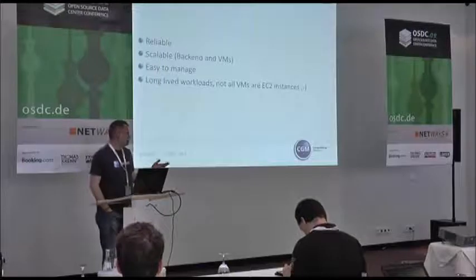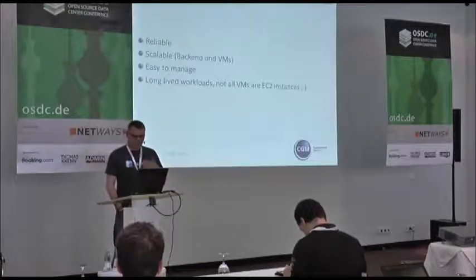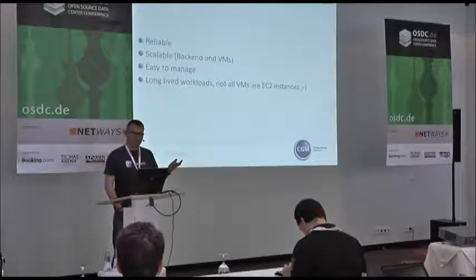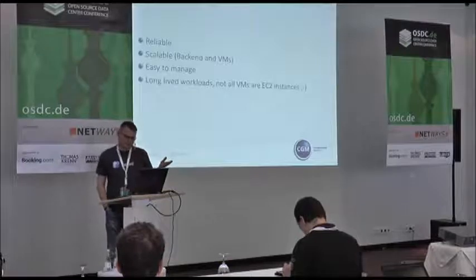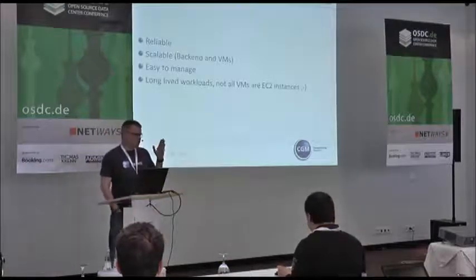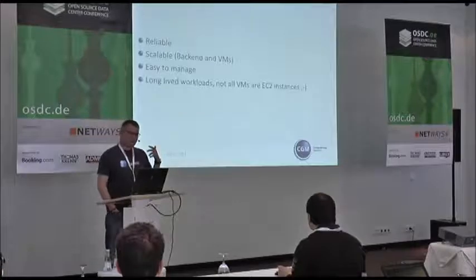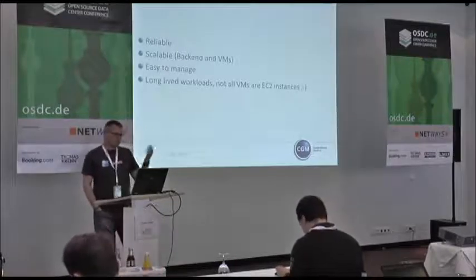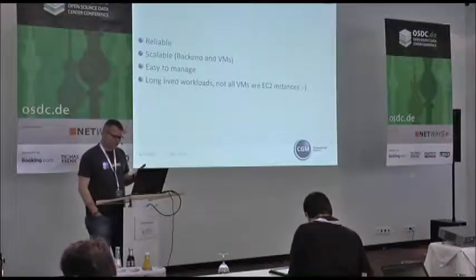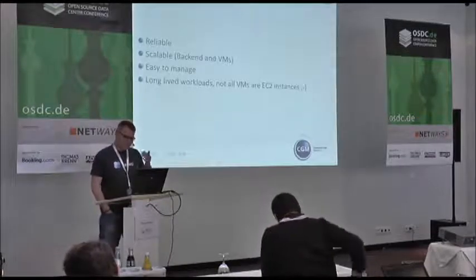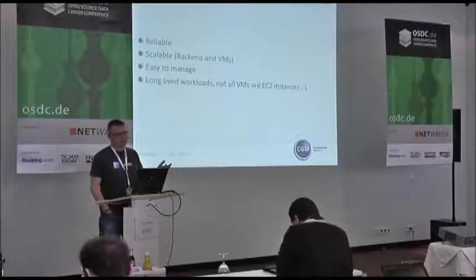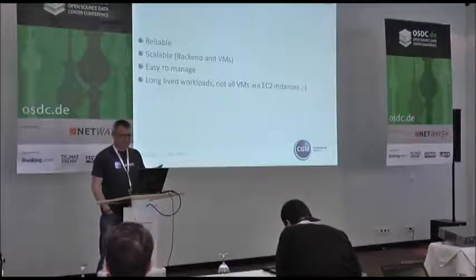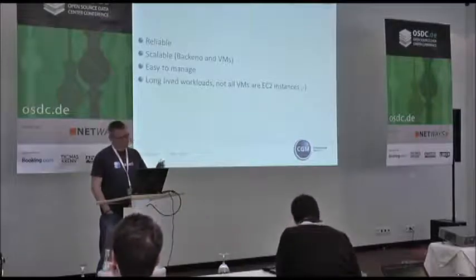When you go to Amazon, they provide an image — you boot the image and get your data from an EBS volume. If it dies, they say just restart it. Netflix has a program called Chaos Monkey which switches off machines in production to prove the infrastructure is resilient at every layer. But most companies are not able to do this. OpenStack now has the ability to boot off volumes — they also saw it's not enough to just spin up instances on local disk and restart when they die.